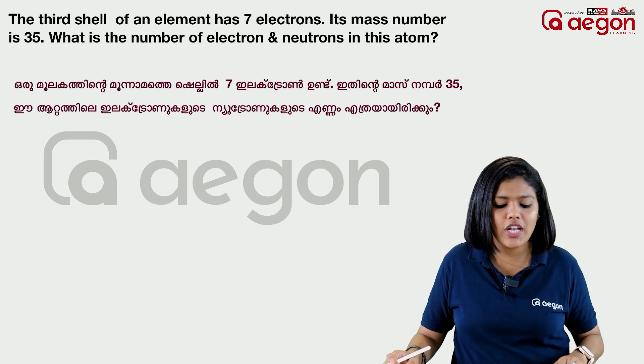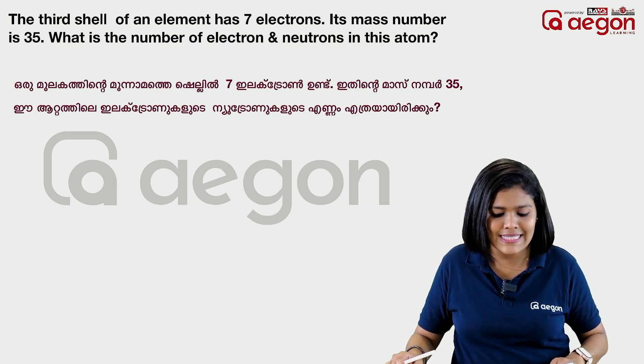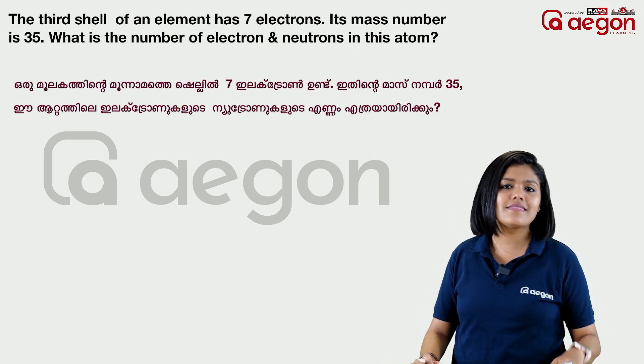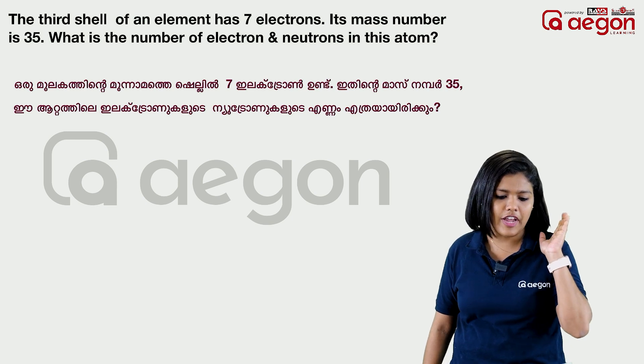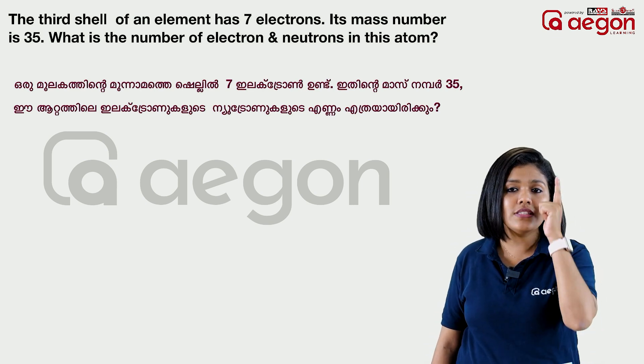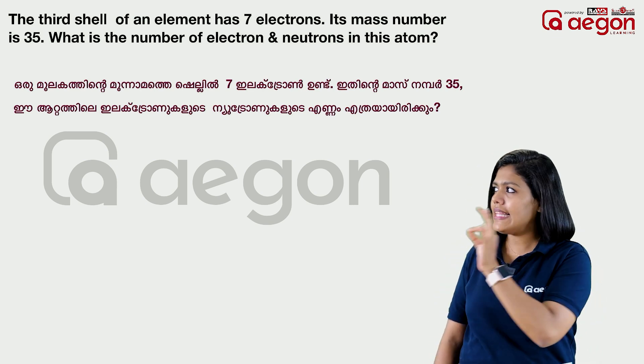Here is a problem: the third shell of an element has seven electrons and its mass number is 35. What is the number of electrons and neutrons in this atom?